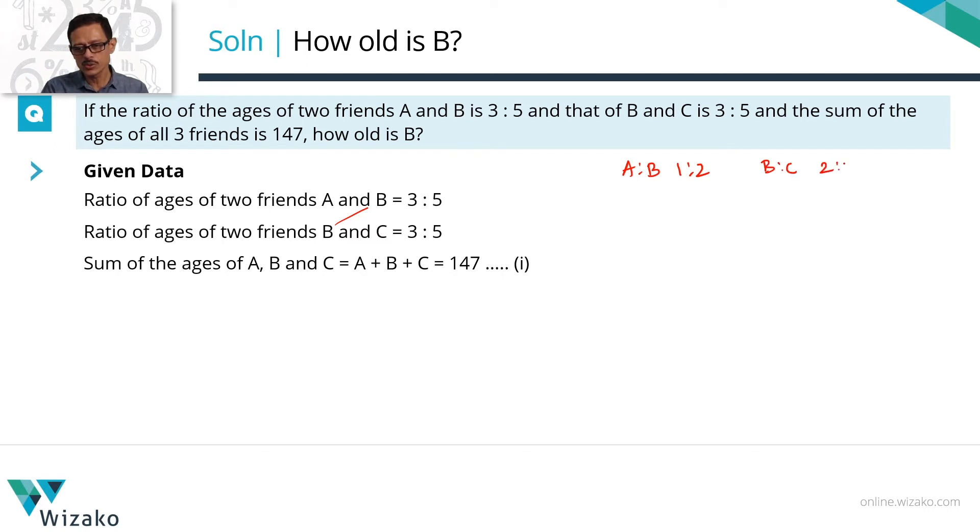And B is to C is 2 is to 3. Will we not be able to find out what A is to B is to C? B is the link between these two. The numerical value of B in both these ratios is the same. So we can quickly say A is to B is to C is equal to 1 is to 2 is to 3.